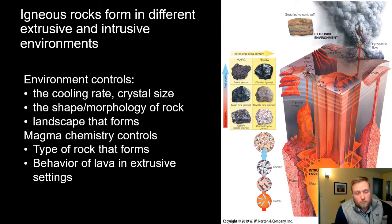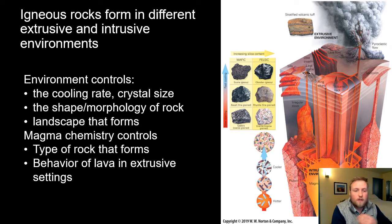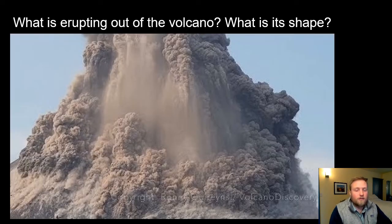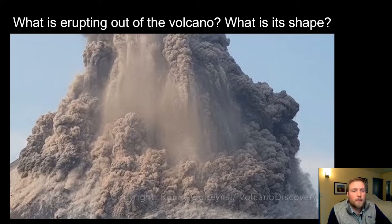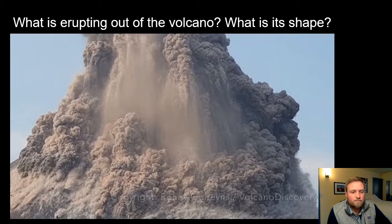That chemistry also controls how lava behaves at Earth's surface in an extrusive environment. This week's lab we are going to explore different volcanoes around the Earth to understand why certain volcanoes look the way they do and have certain characteristics. The first video I'm going to show is from a volcano called Krakatoa in Indonesia.